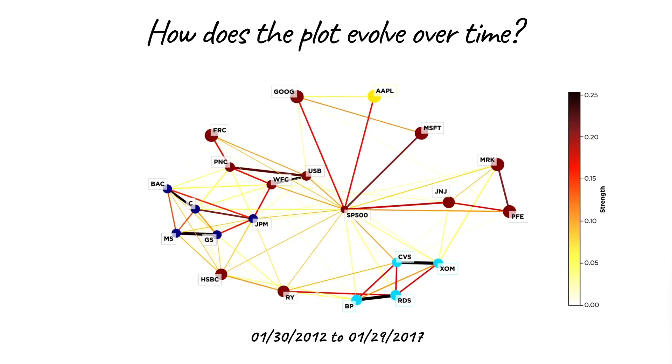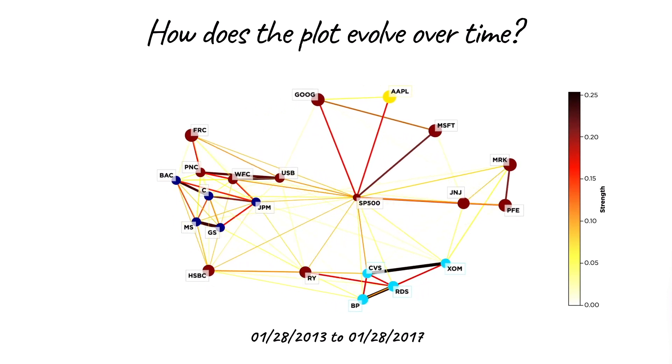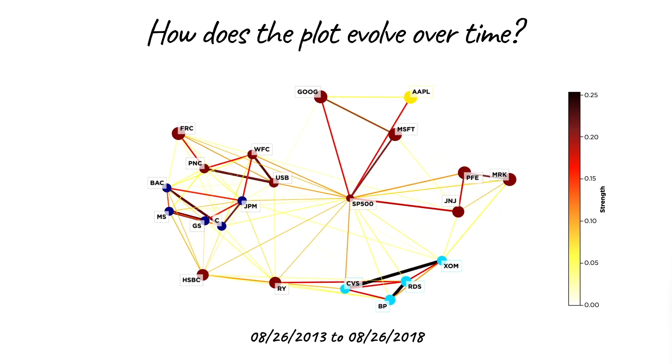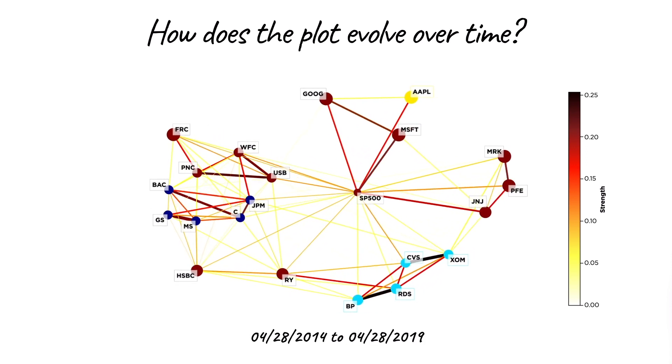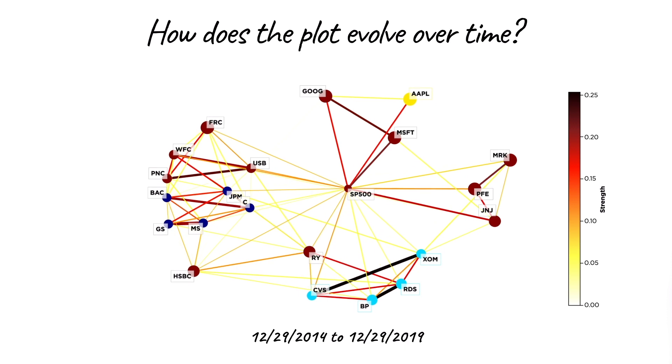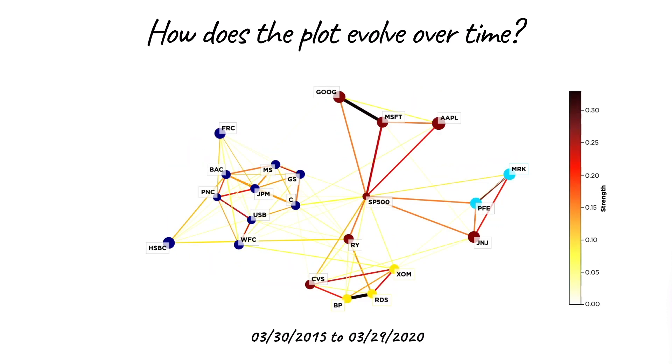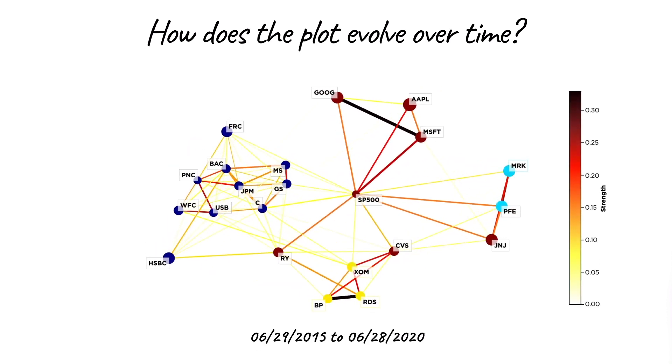Stocks from the same sector are usually grouped together. For example, most of the banks are clustered together. Tech sector firms are grouped together with the S&P 500 market index at the center of the graph. Finally, two firms from the health sector form a new cluster.